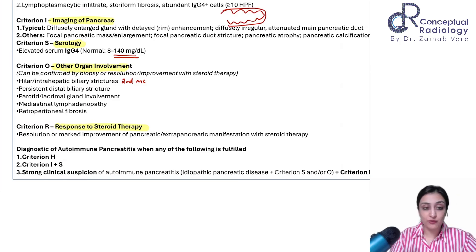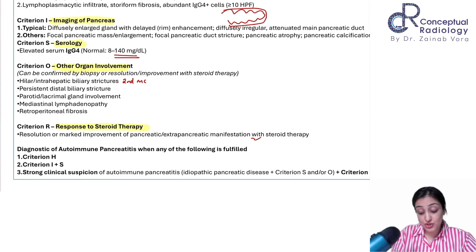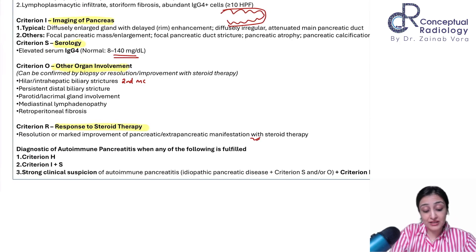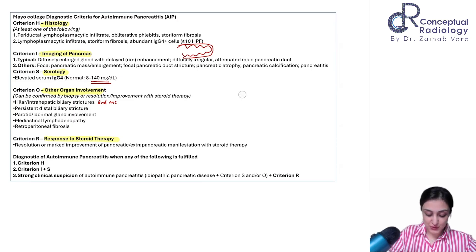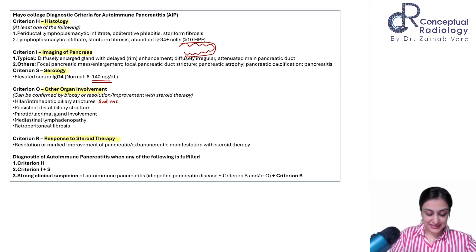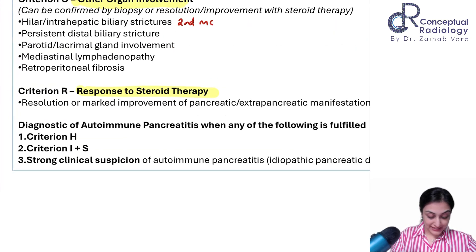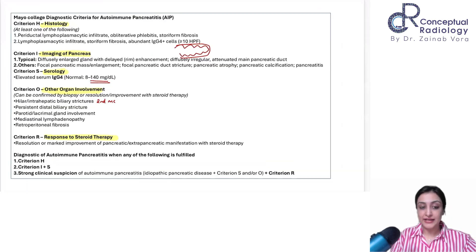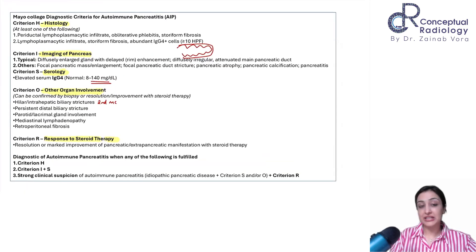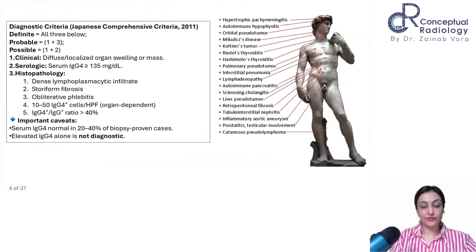We will see head-to-toe involvement as the class progresses. Response to steroid is so marked that it is itself a diagnostic criterion. This is the HISSOT criteria — either histology or imaging plus serology is needed to make a diagnosis of IgG4.